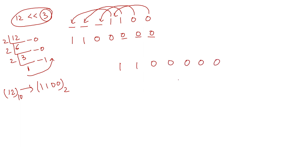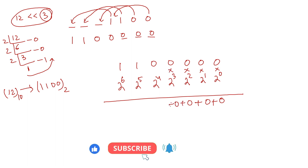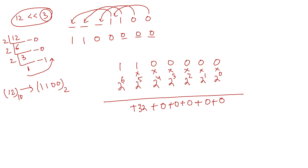Now converting 1100000 to decimal: 2⁰×0 + 2¹×0 + 2²×0 + 2³×0 + 2⁴×0 + 2⁵×1 = 32 + 2⁶×1 = 64. Adding: 32 + 64 = 96. So whenever I do 12 left shift 3, the answer is 96.